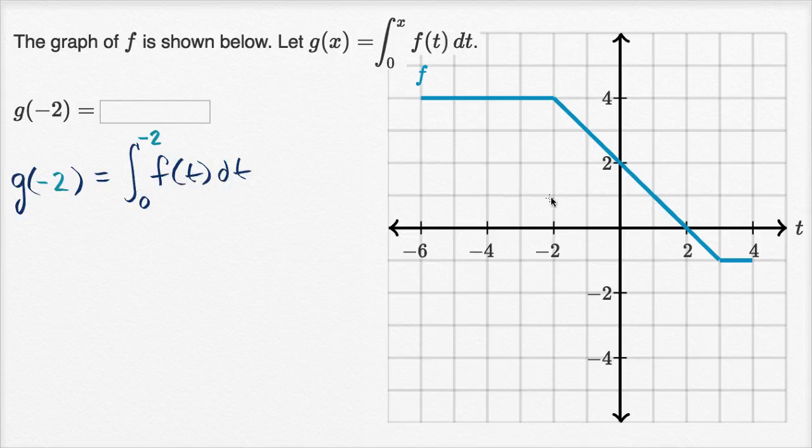Now before we even look at this graph, you might say, okay, this is the region under, the area of the region under the graph y equals f of t between negative two and zero. But you have to be careful. Notice, our upper bound here is actually a lower number than our lower bound right over here. So it will be nice to swap those bounds so we can truly view it as the area of the region under f of t, above the t-axis, between those two bounds.